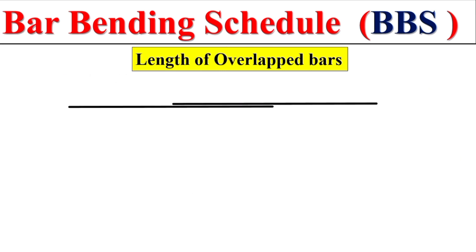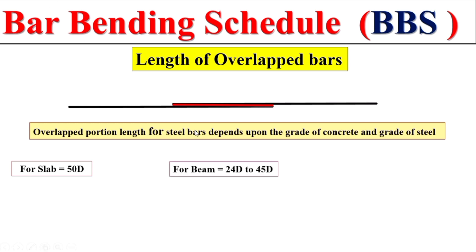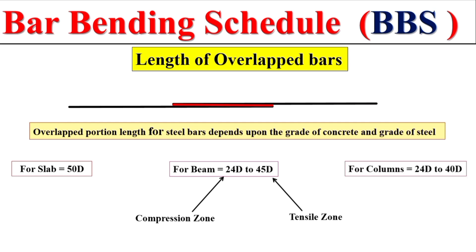The last shape in Bar Bending Schedule is the overlap bar. The overlap length depends on the grade of steel and the grade of concrete. Normally, if overlap is in a slab, it is 50 times the diameter of the bar. If in a beam in a compression zone, it is 24 times the diameter; in a tension zone, it is 45 times the diameter. For a column, the overlap ranges from 24 to 40 times the diameter of the bar.